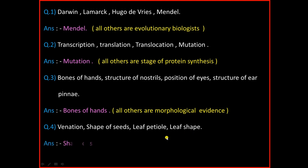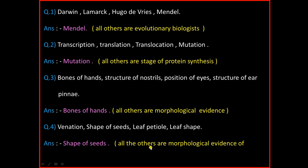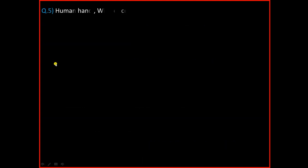Question Number 4: Venation, Shape of seeds, Leaf petioles, Leaf shapes. And the answer is Shape of seeds. All others are morphological evidence.